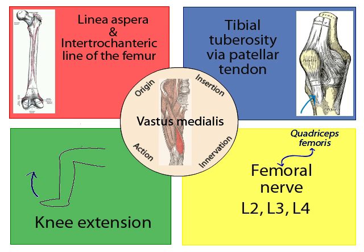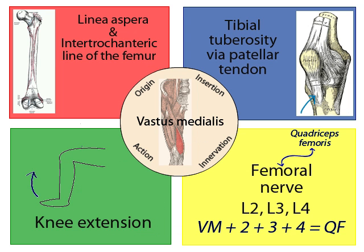The myotome for the vastus medialis is L2, L3, and L4. A trick for remembering this is that the vastus medialis is the first muscle in the quadriceps group, along with three other muscles — numbers 2, 3, and 4.